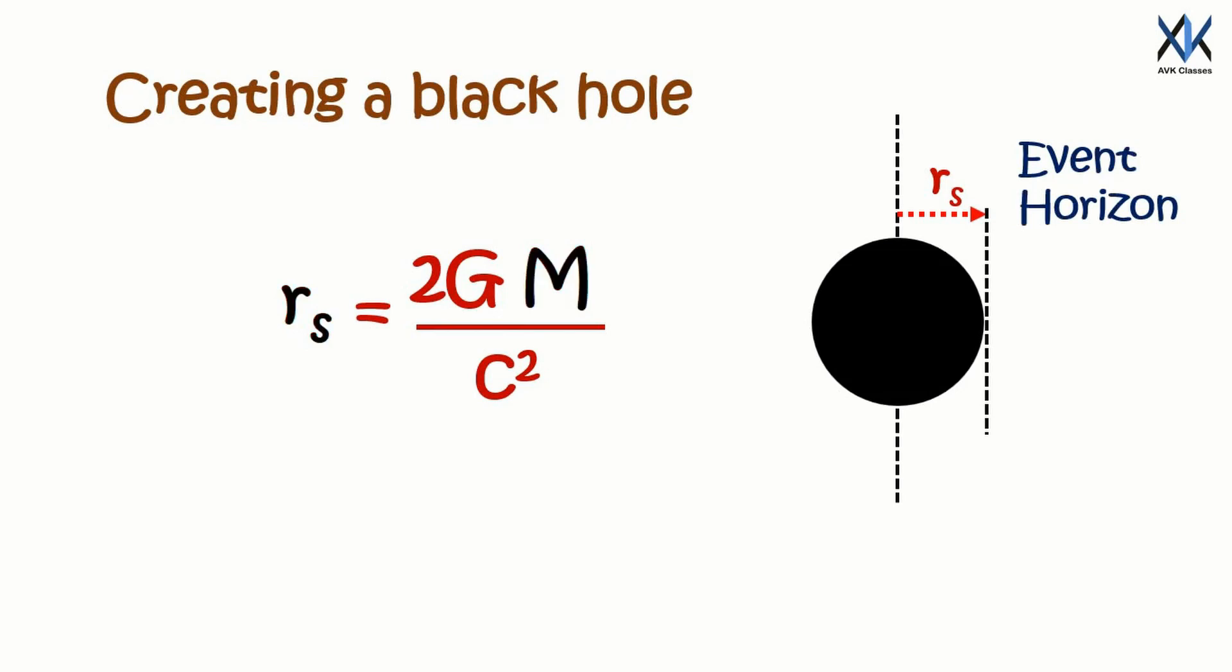And how big it is only depends on the mass of the object, since G and C squared are constants. So heavier the black hole, bigger the Schwarzschild radius.